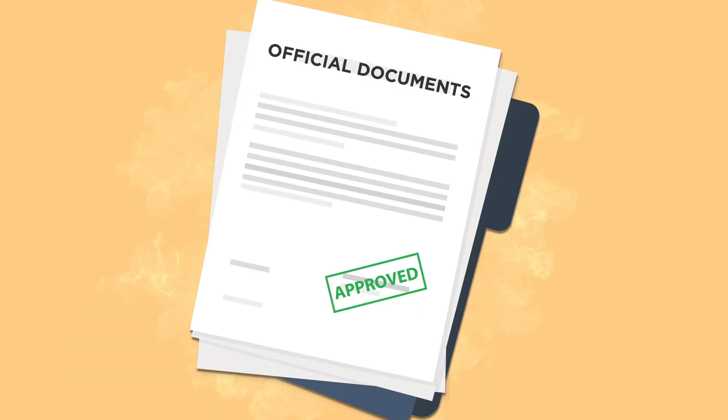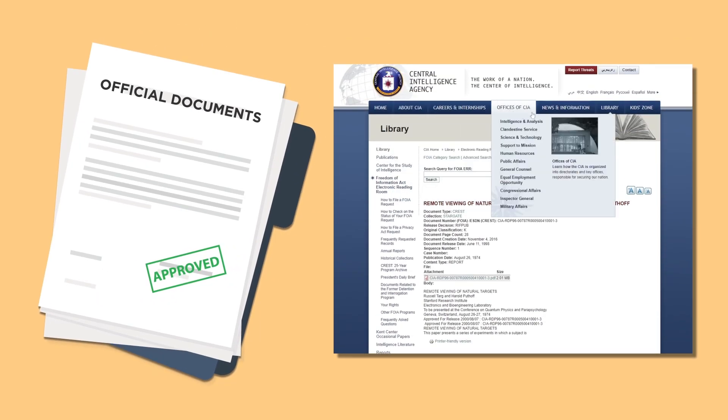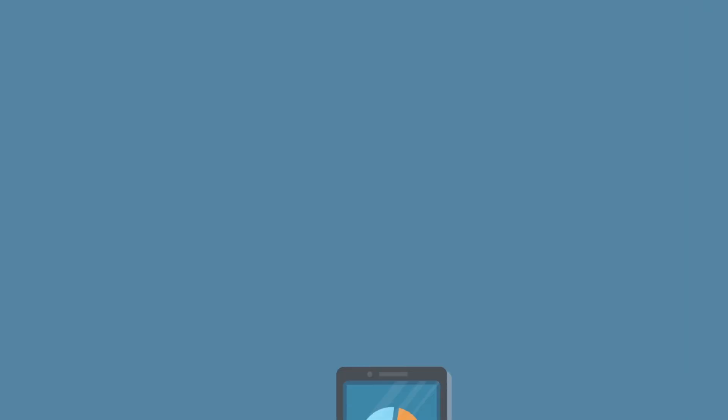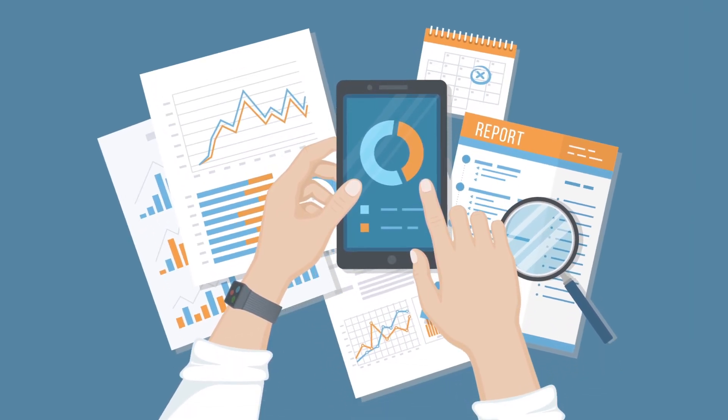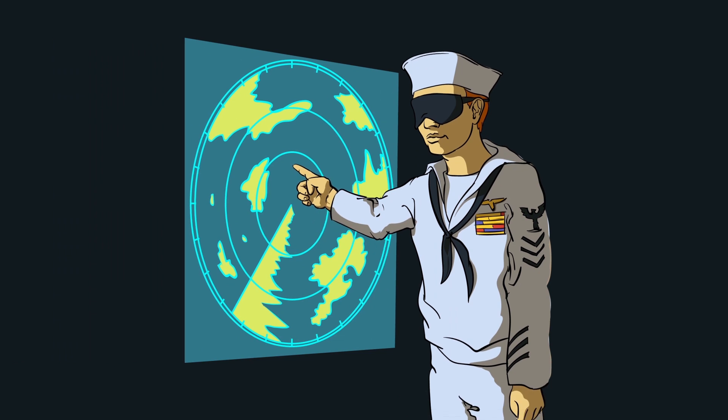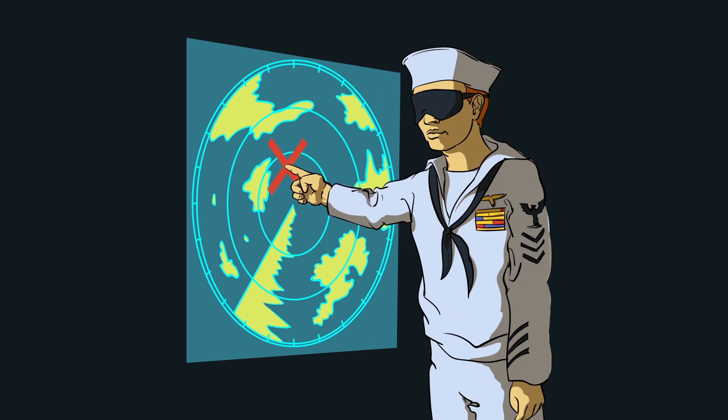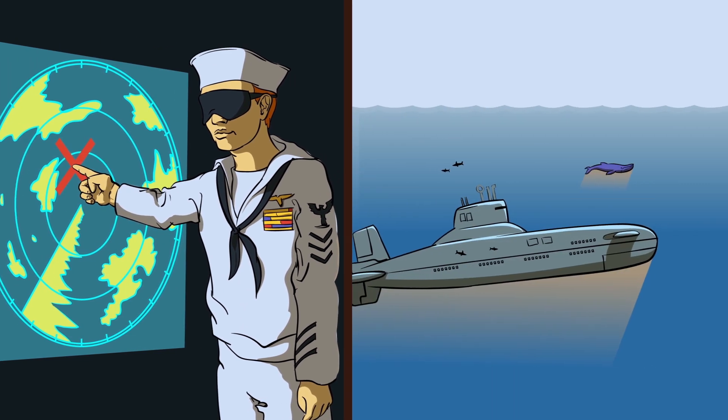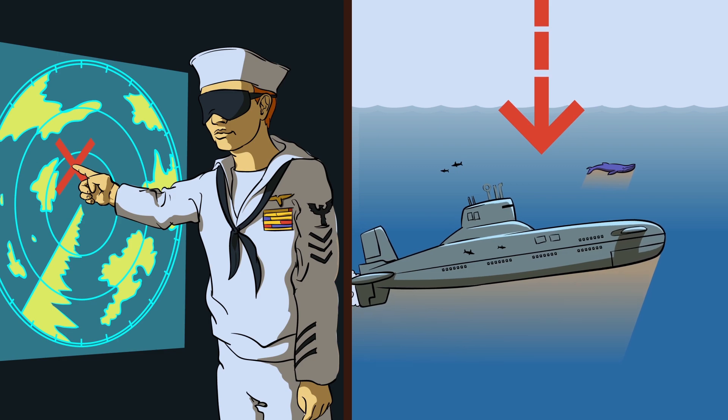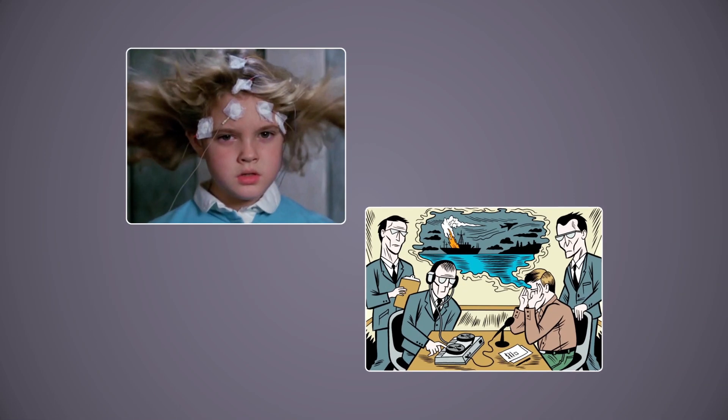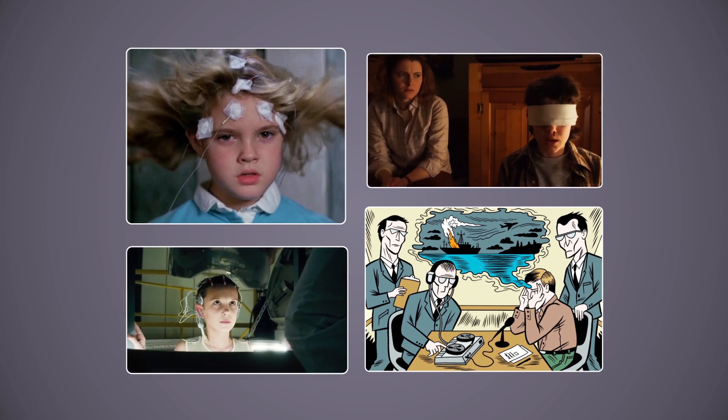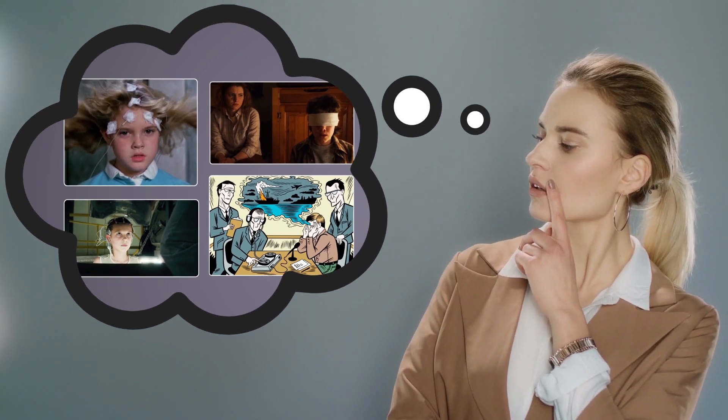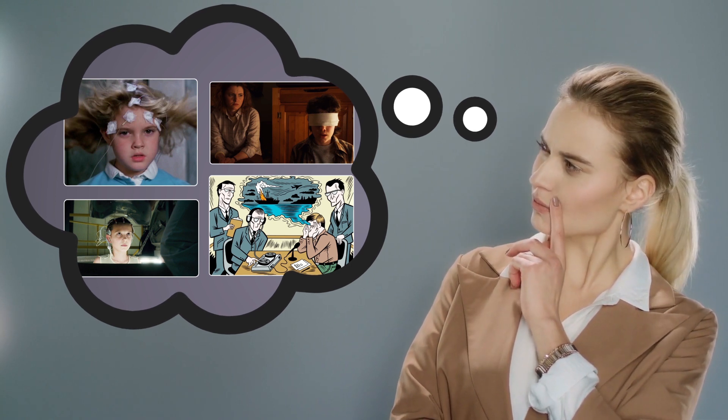But the weirdest part? The trials were successful, at least according to the official documents, which are now available on the official CIA website. As part of the program, there were even reports verified by a number of sources that a Russian Akula submarine was located using remote viewing, and its presence was later verified by satellite images. A variety of apparent successes over the program's 20-year span, seemingly verified at the highest levels of US government, are enough to, at the very least, provide some food for thought.